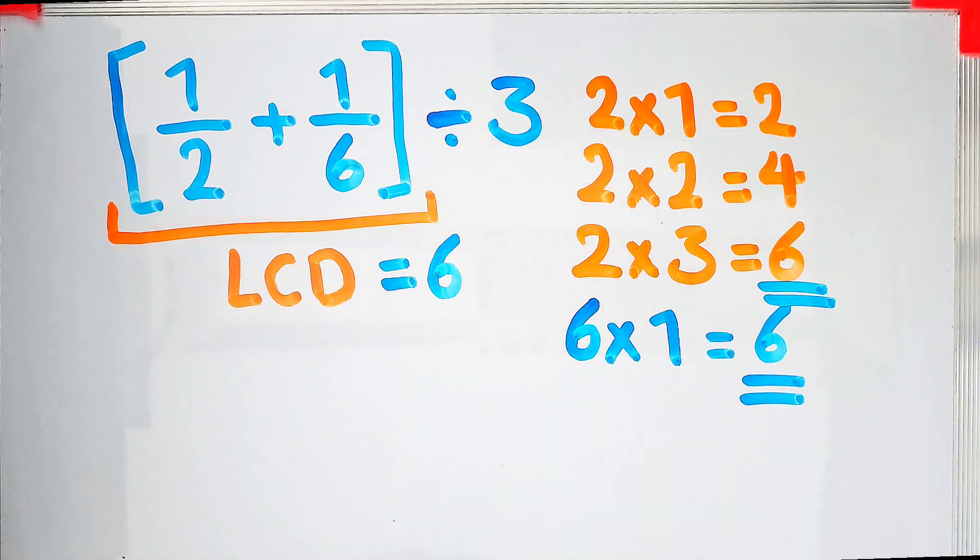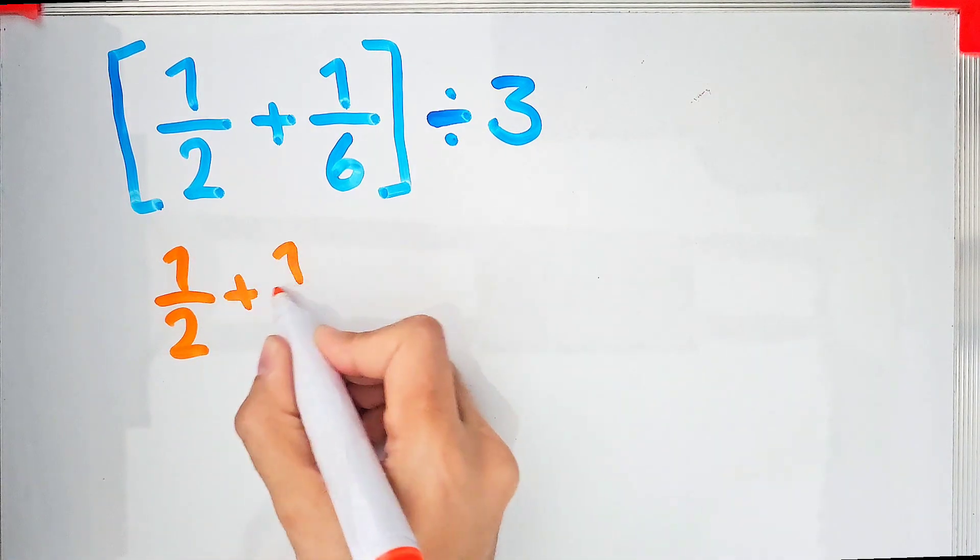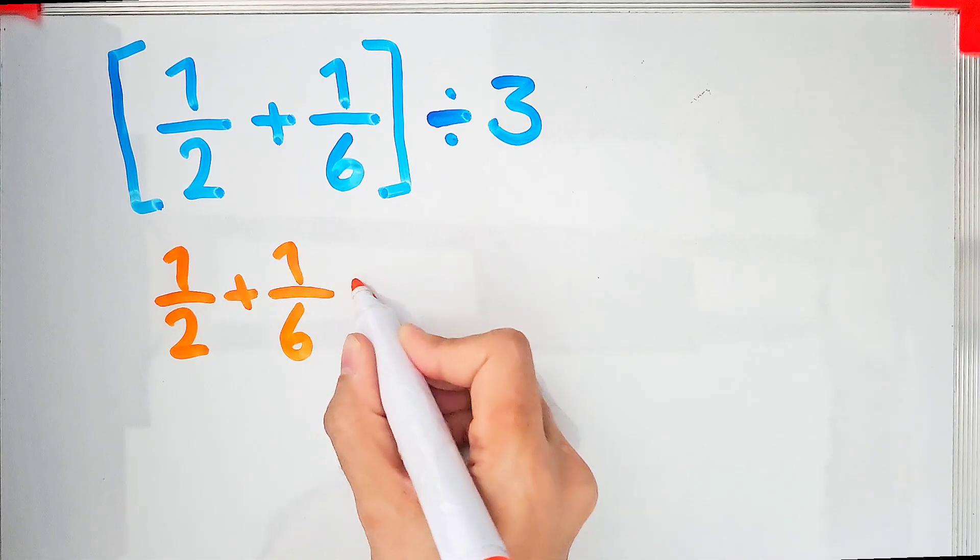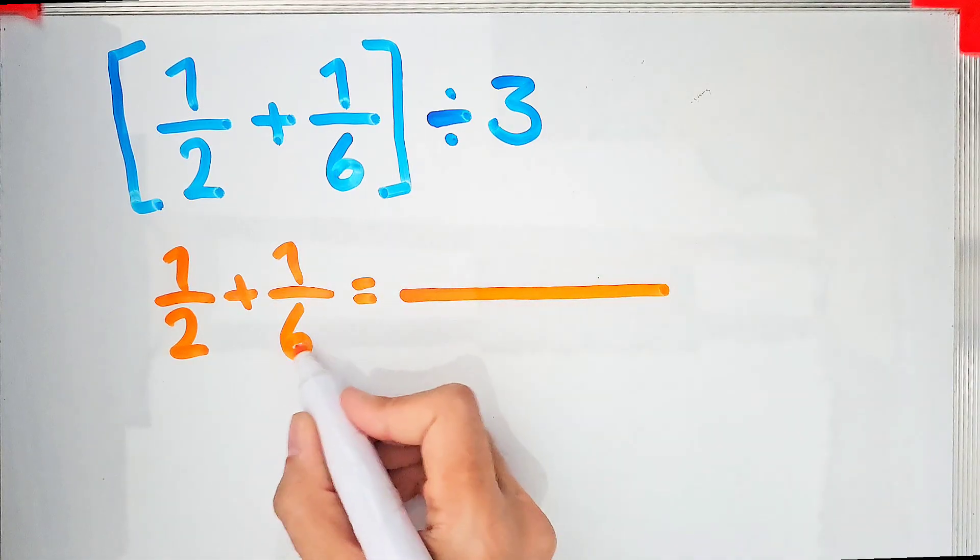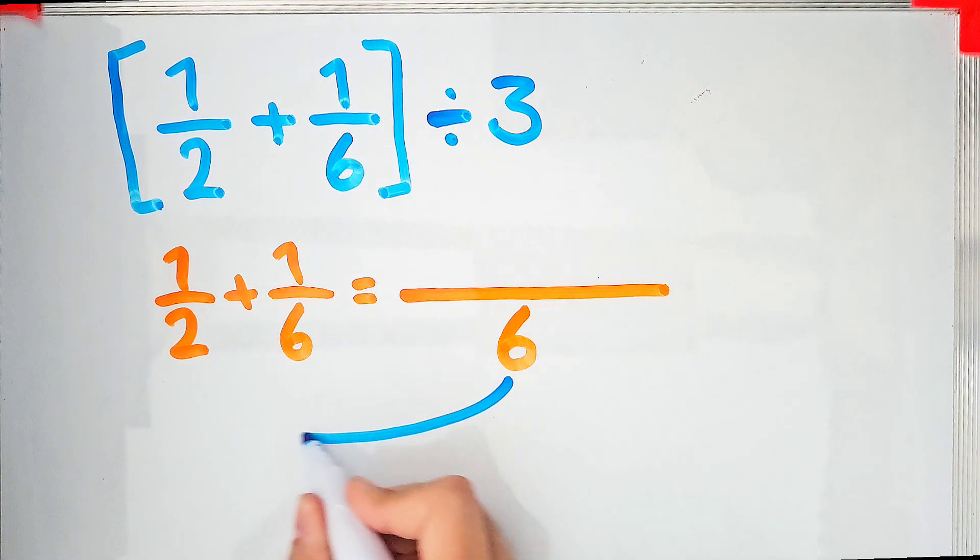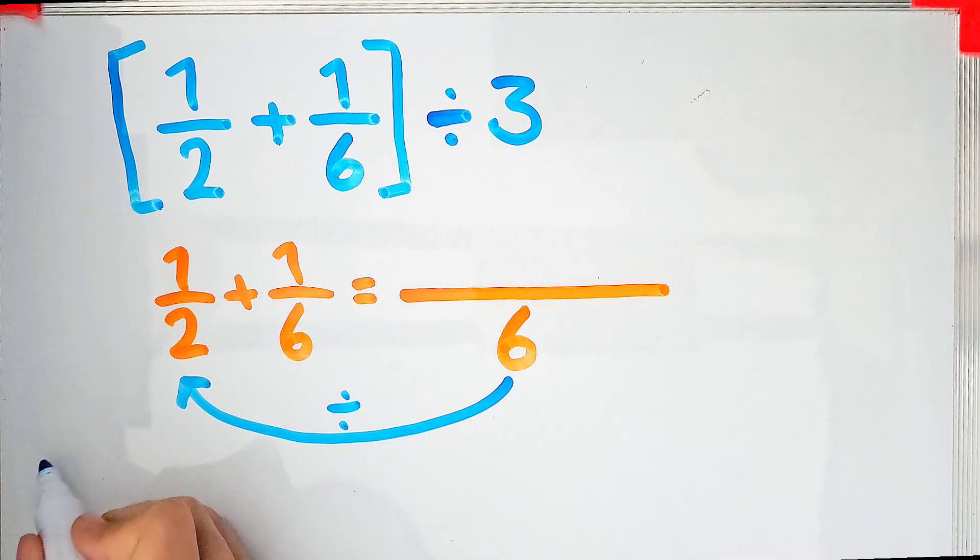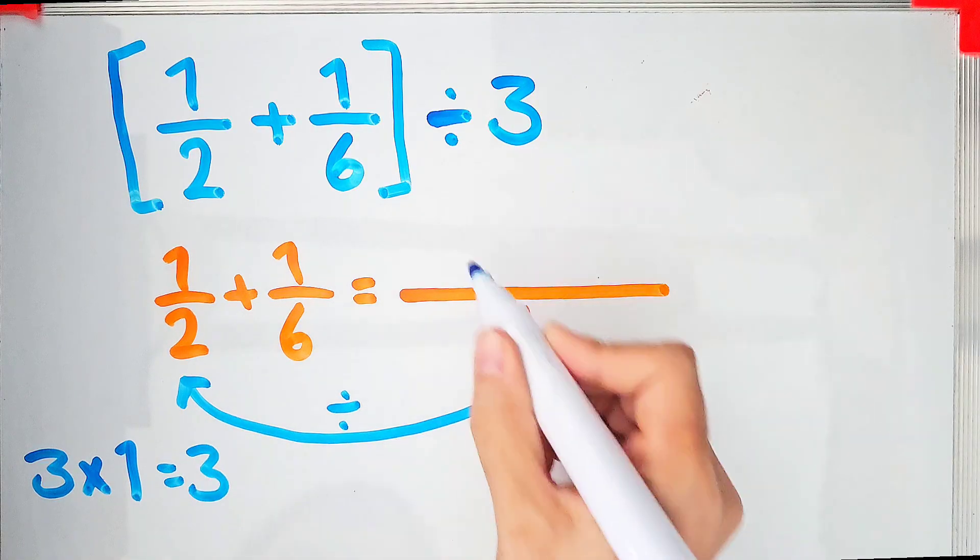When two fractions are added, first we find the common denominator. After we find the common denominator we simplify. As you can see in the image, we have a common denominator. In this step we divided the common denominator by the denominator of the fractions. 6÷2=3 and 3×1=3, we write it in the numerator.